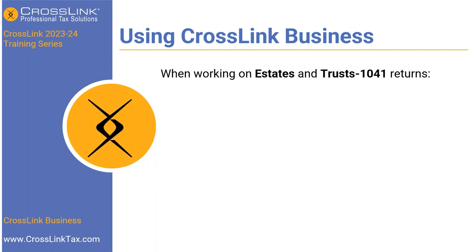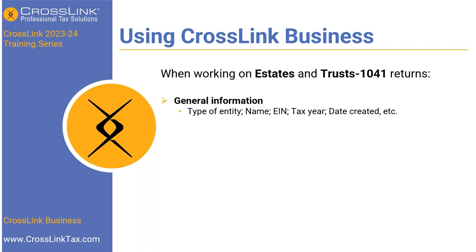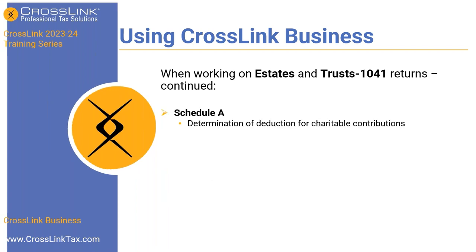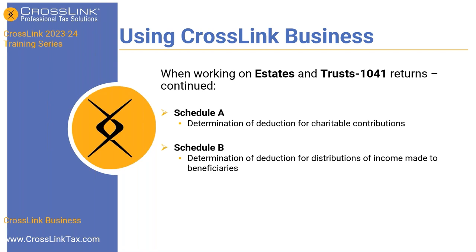When using Crosslink Business for estates and trusts — the 1041 returns — you'll complete general information, income totals, and deductions including taxes, fees, charitable contributions, and then taxes and payments including taxable income, calculated tax, and previous payments. Also required are Schedule A (deductions for charitable contributions), Schedule B (distribution deduction for beneficiaries), Schedule G (tax computation and credits), and miscellaneous items for estate and trust returns.